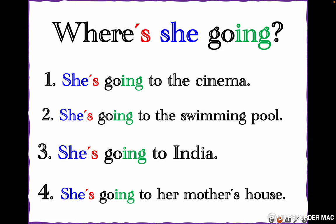Where's she going? — She's going to the cinema now, she's going to the swimming pool now, she's going to India now, she's going to her mother's house now. Let's repeat: 'Where's she going?' — She's going to the cinema, she's going to the swimming pool, she's going to India, she's going to her mother's house.